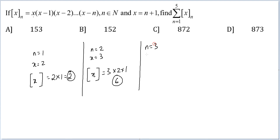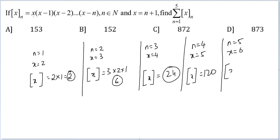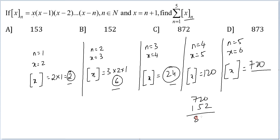When n equal to 3, x equal to 4, this function of x would be equal to 24. n equal to 4, x would be equal to 5, this function of x would be equal to 120. And for n equal to 5, this function of x would be equal to 720. You need the summation of all these: 2 plus 6 plus 24 is 32, 32 plus 120 is 152, and 720 plus 152 gives you 872, which is the answer to this question.